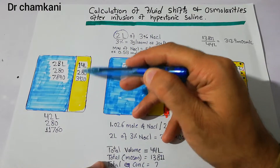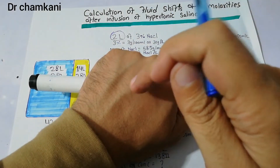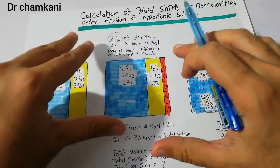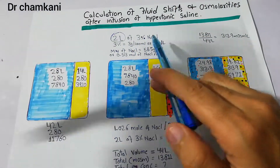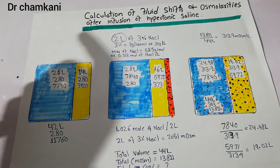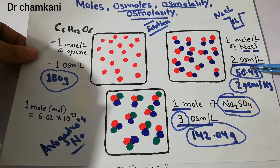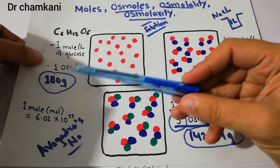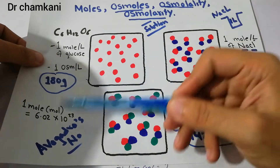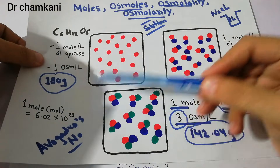The yellow color represents the extracellular fluid compartment composed of plasma and interstitial fluid. To calculate milliosmoles: the molecular weight of NaCl is 58.5 g/mol. Previously we discussed that glucose is 180 g/mol, NaCl is 58.4 g/mol, and sodium sulfate is 142 g/mol — each representing one mole containing 6.02 × 10²³ particles (Avogadro's number).